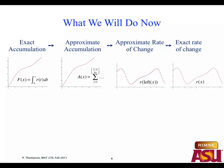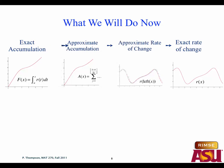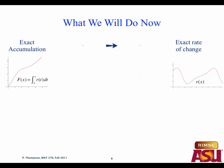Now we're turning the tables. We're going to start with an exact accumulation function. From that, build an approximate accumulation, then approximate rate of change, so that we can have exact rate of change from exact accumulation. You know how much of something you have — you want to know how fast it's changing. That's our new endeavor: reversing the process.